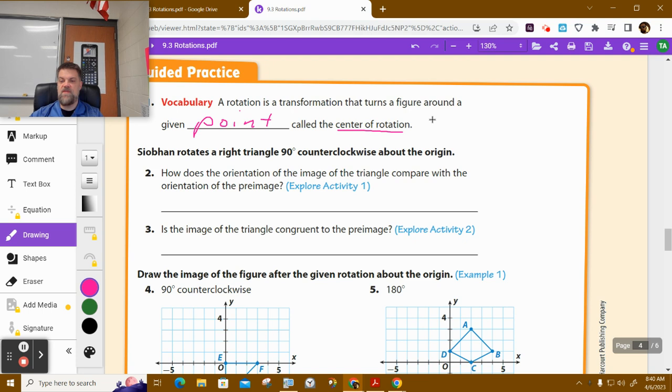And I think for most of these examples, there wasn't one that wasn't the origin. I don't want to mispronounce that name. I think it's Ceoban, rotates, and I apologize if I mispronounce it, but it rotates a right triangle 90 degrees counterclockwise about the origin.